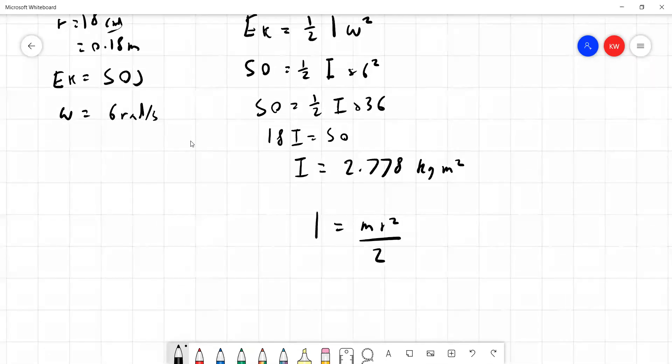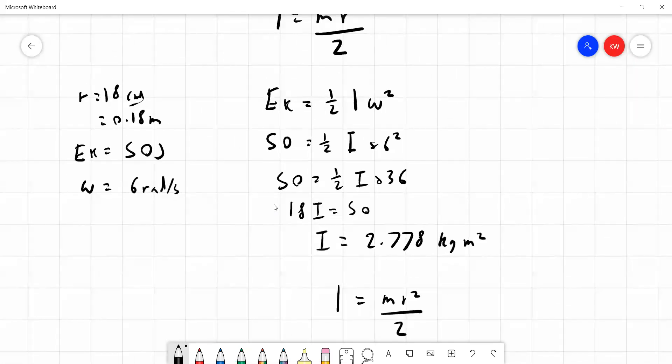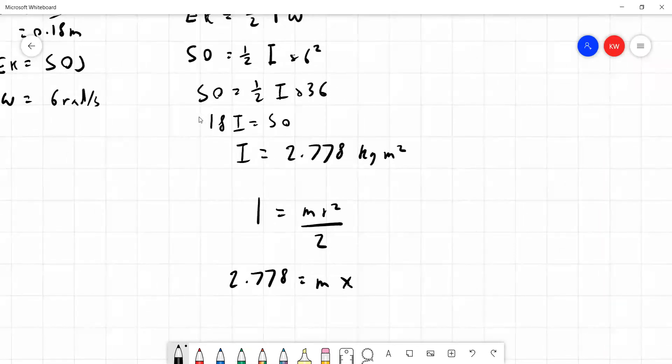So we have 2.778 for I is equal to m times r squared and if we remember that r is 18 centimeters so it's 0.18 meters, so we'll put this in to our formula 0.18, remember to square it, and that's all divided by 2.